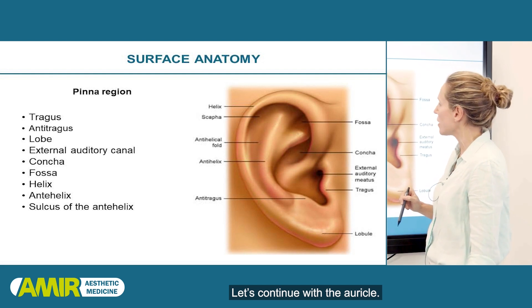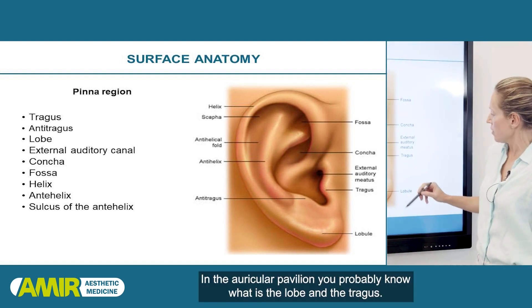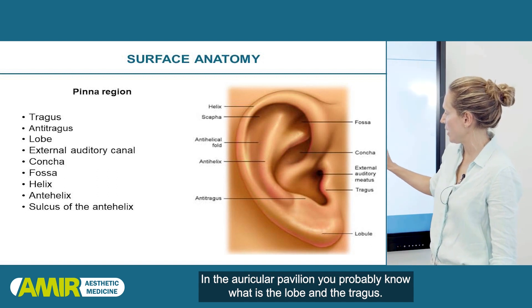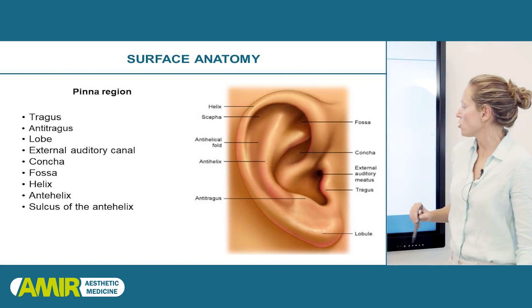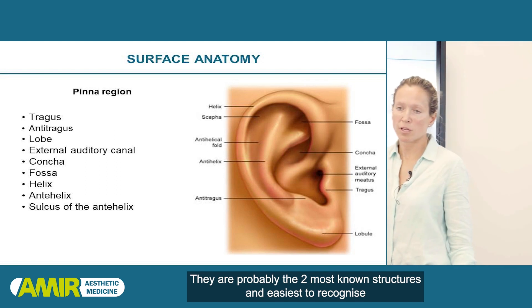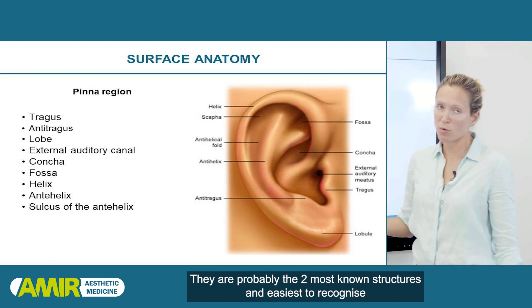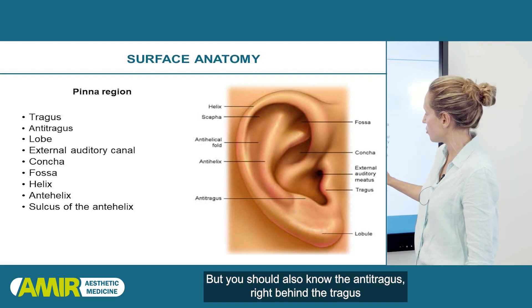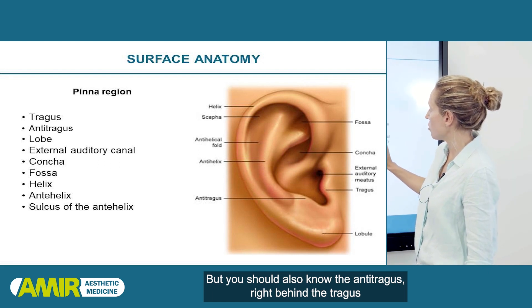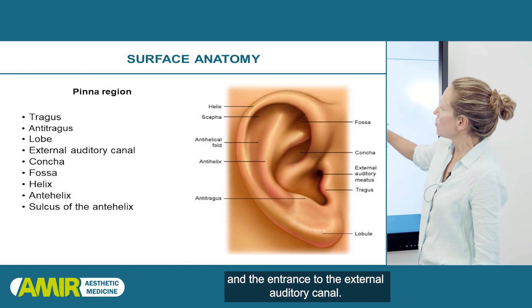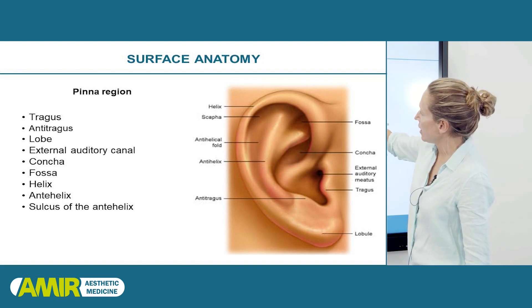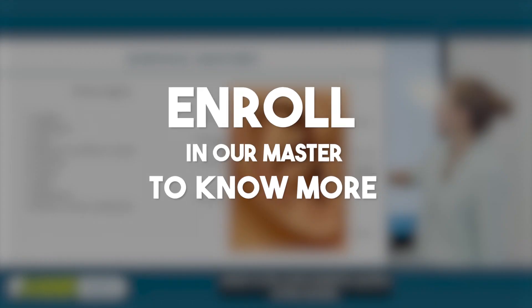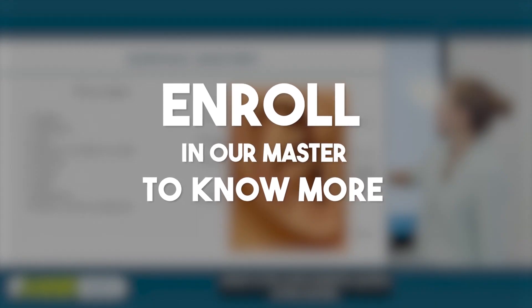Let's continue with the auricular region. In the auricular pavilion, you probably know the lobe and the tragus — probably the two most known and easiest to recognize structures. But you should also know the antitragus, right behind the tragus, and the entrance to the external auditory canal. It is essential that you know the helix, which is the most posterior point of the ear.